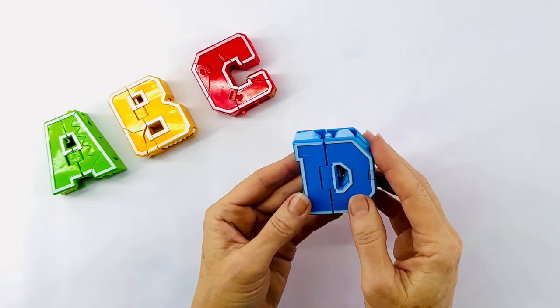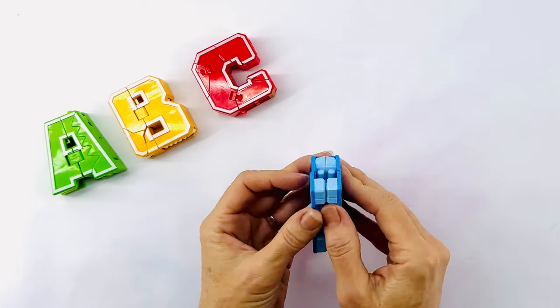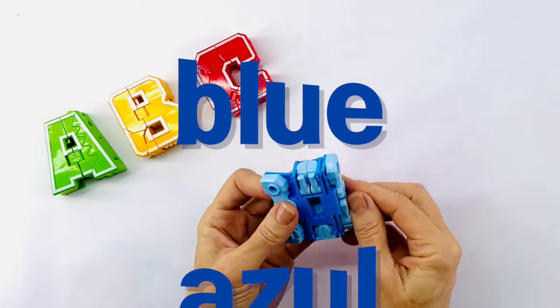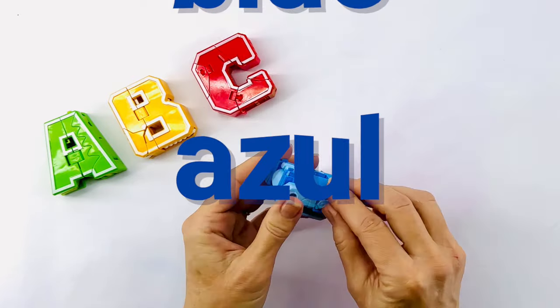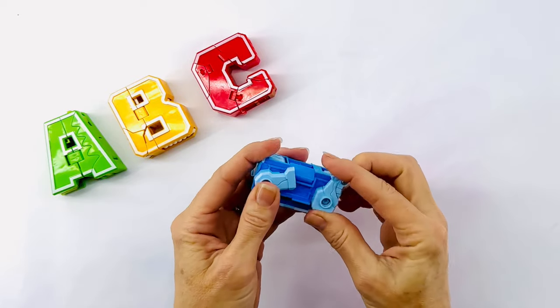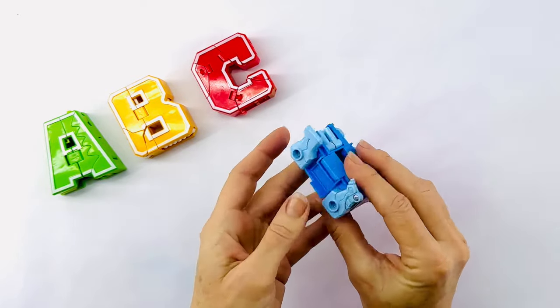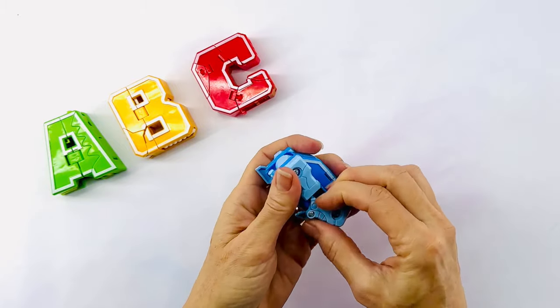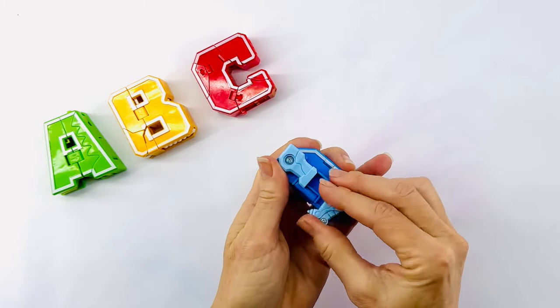The letter D is next. This D is blue. In Spanish, blue is azul. Now, let's open up this letter D and see what we have. The legs. It looks like it has four legs.